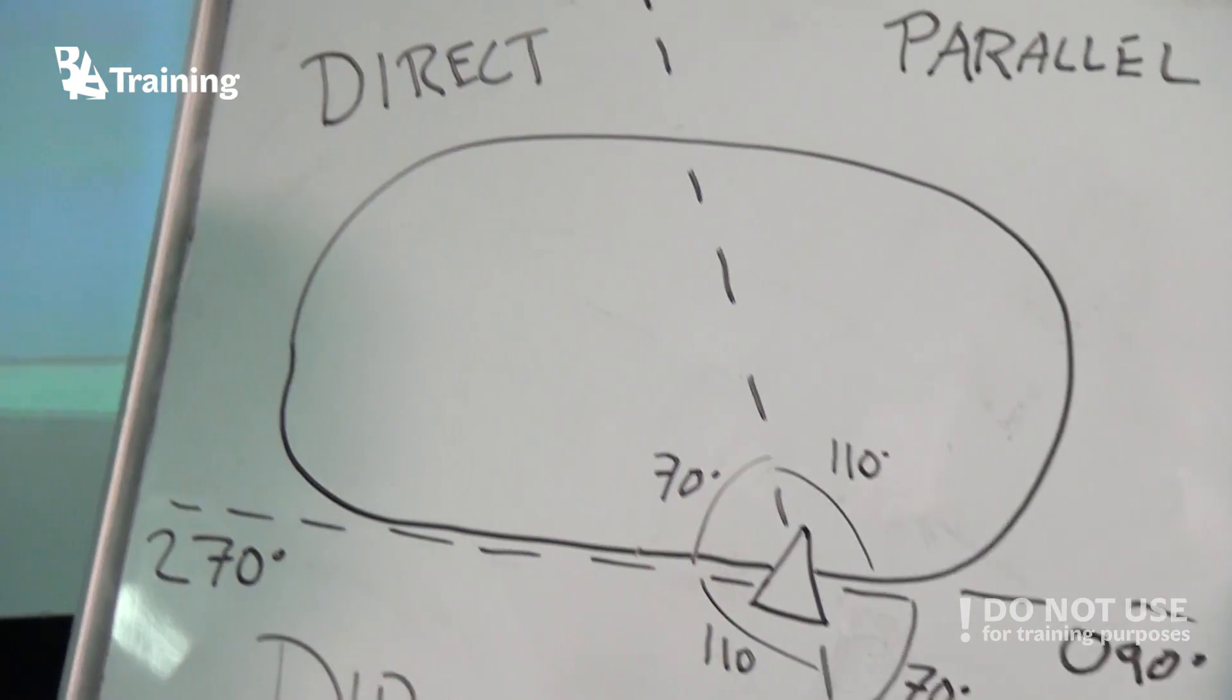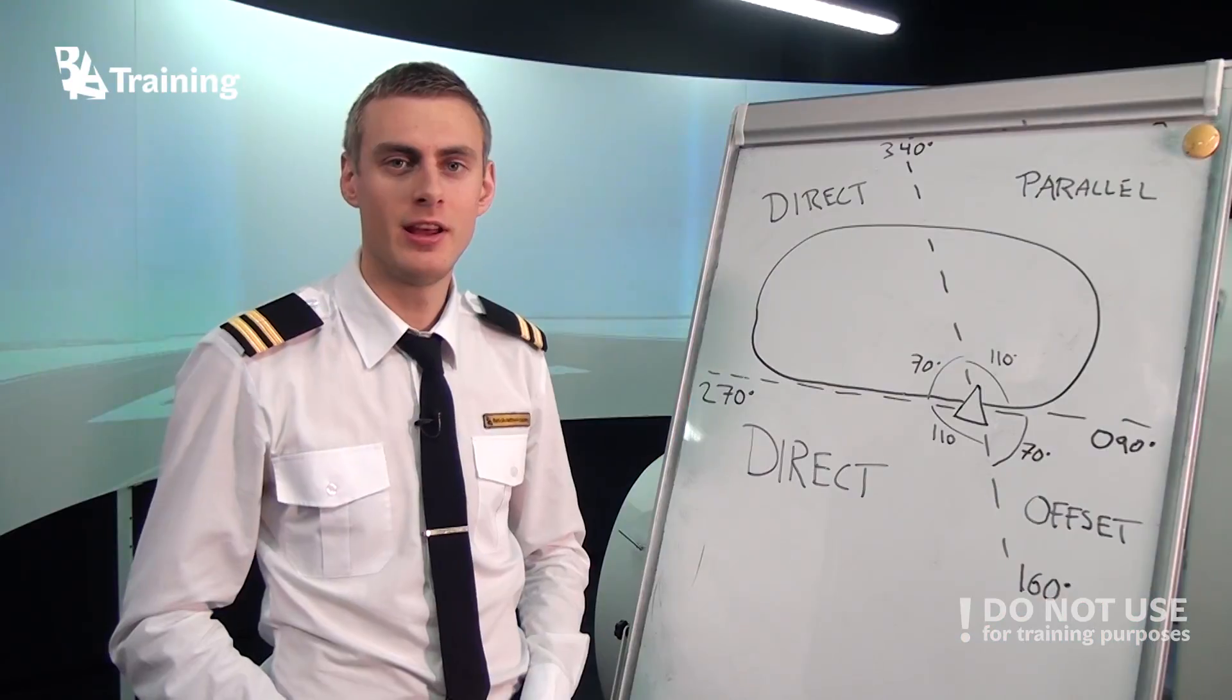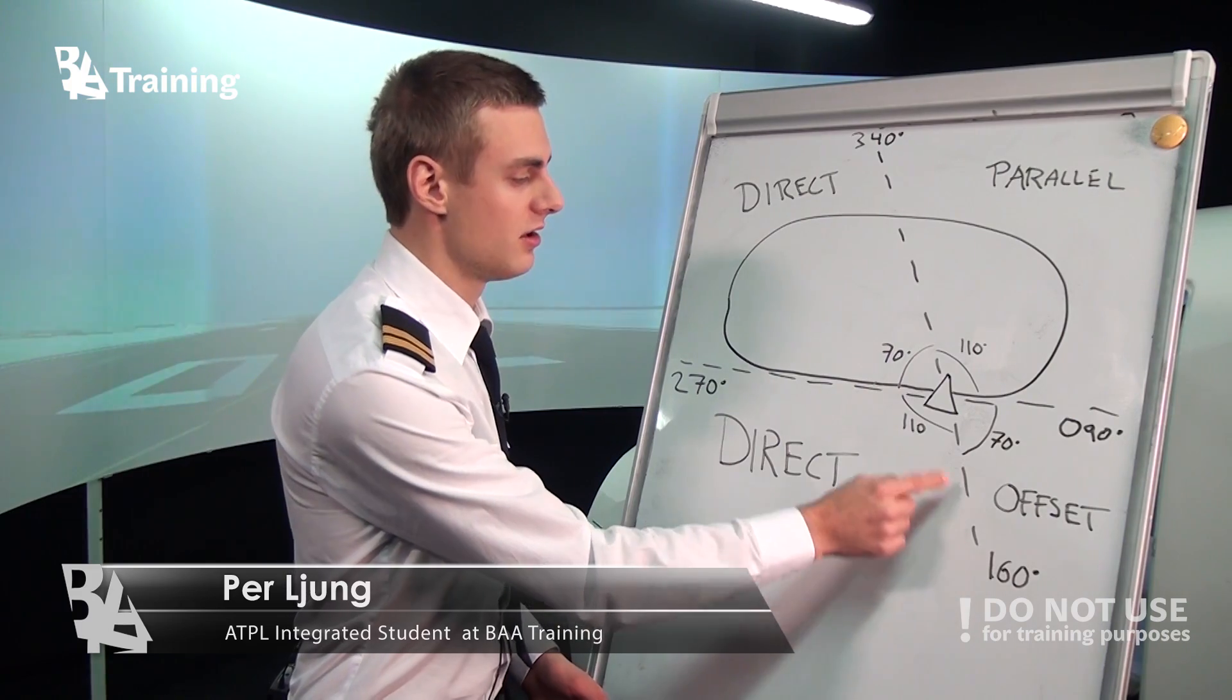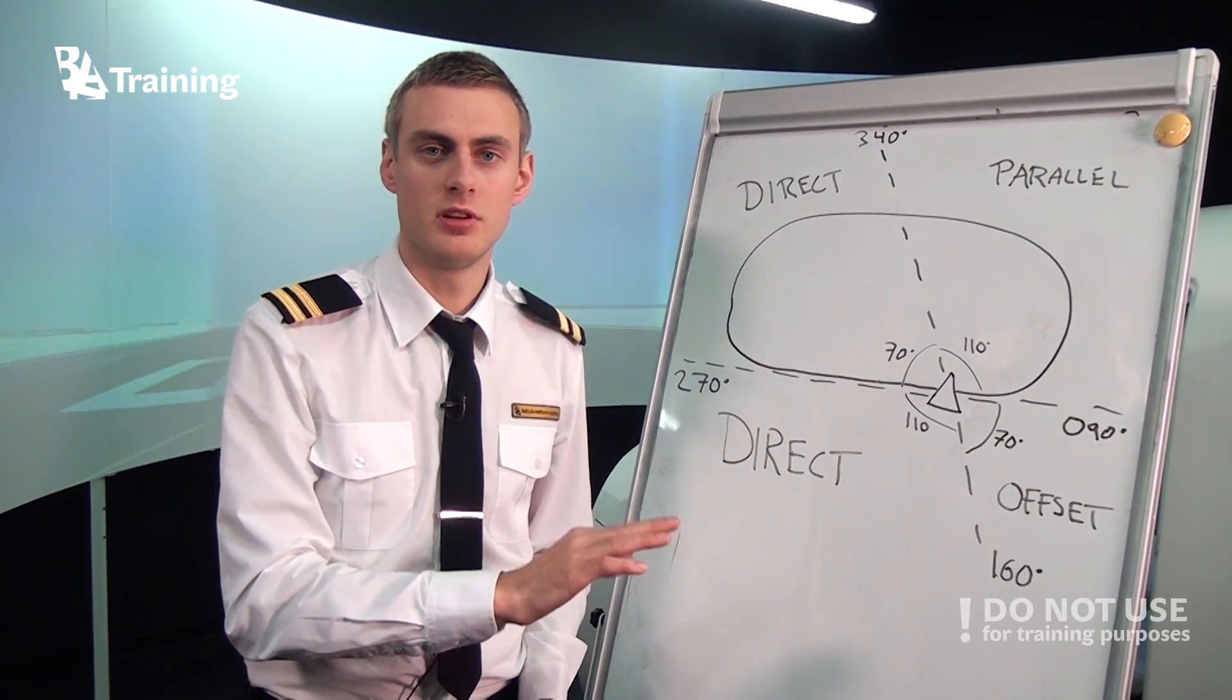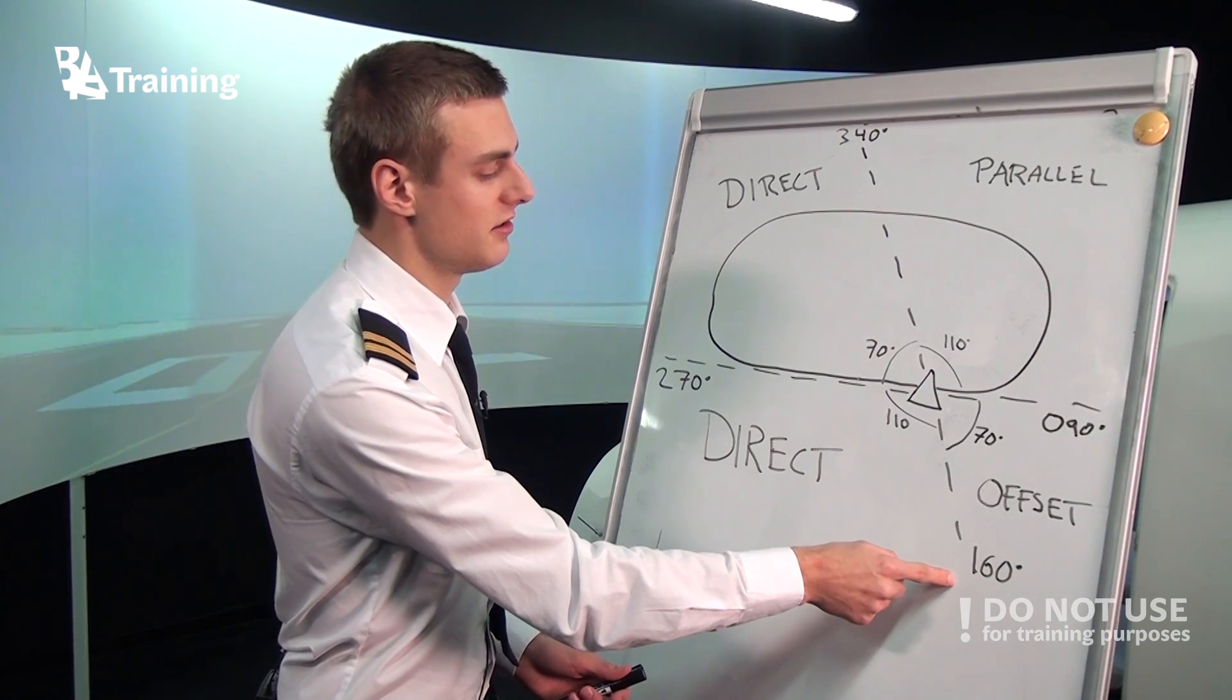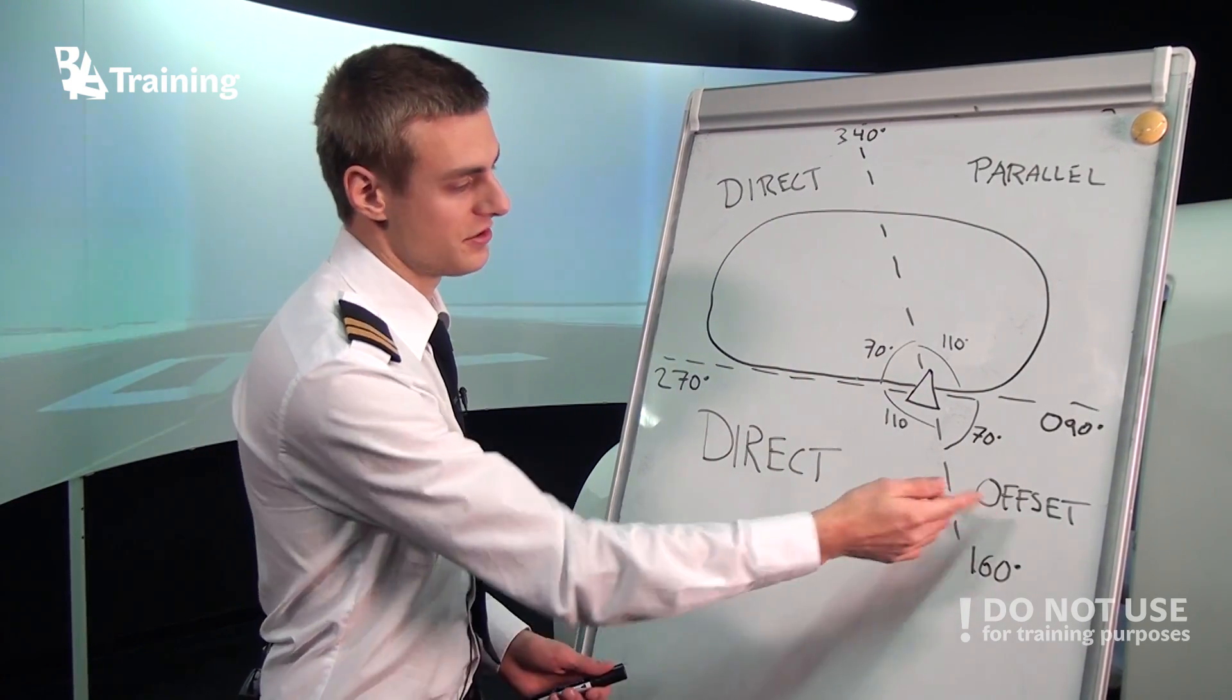Also known as teardrop entry. And now we will talk more about how the different entries look like. And also if we are plus minus five degrees of the boundary, we have a freedom of choice. So for example, if we are at 163 degrees, somewhere here, then we can choose if we want to use the direct entry or the offset entry.